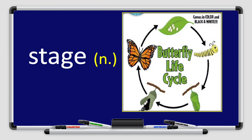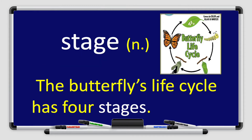Next we have the word stage. Stage. Repeat after me: stage. Great job boys and girls. Stage is a noun. Look at the picture — we can see the butterfly life cycle. In a butterfly's life cycle we have four stages. The butterfly's life cycle has four stages.